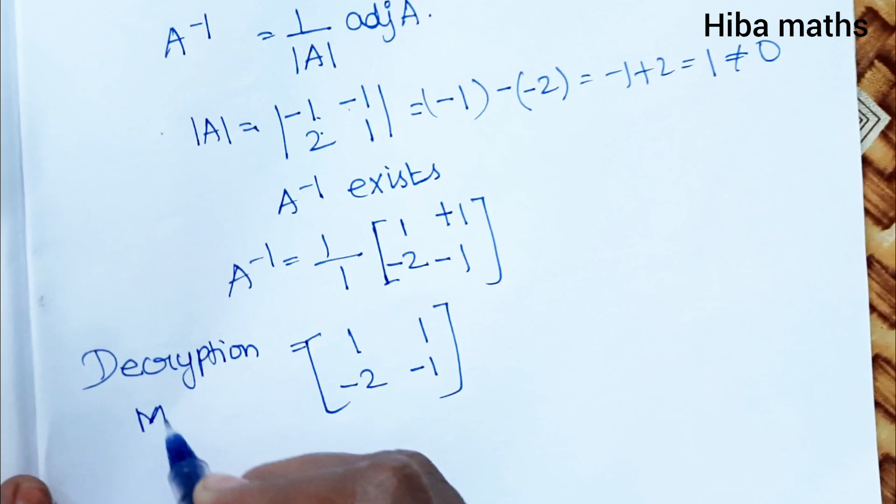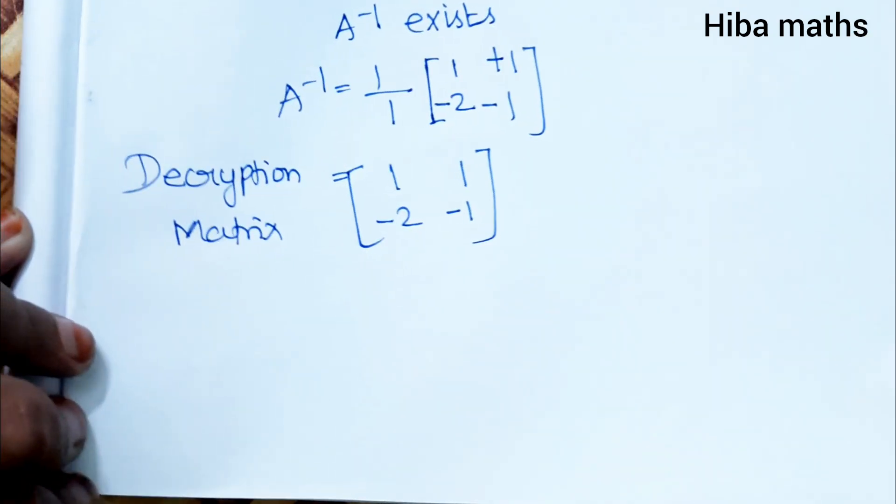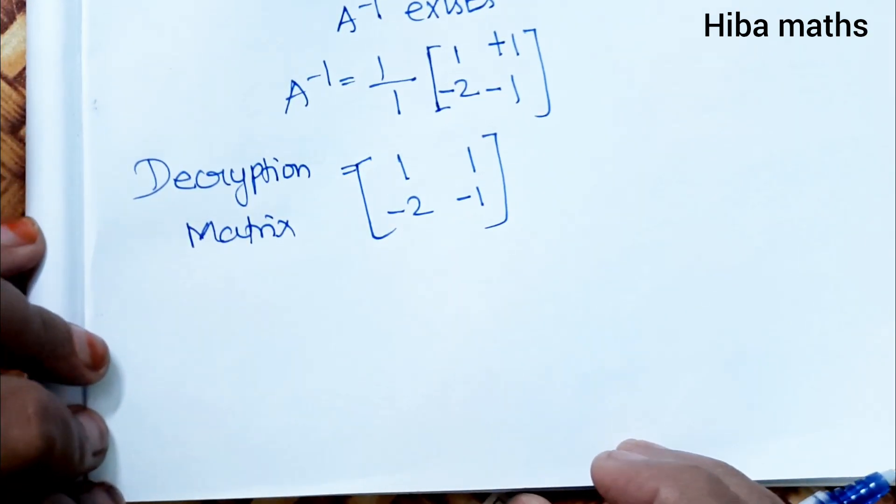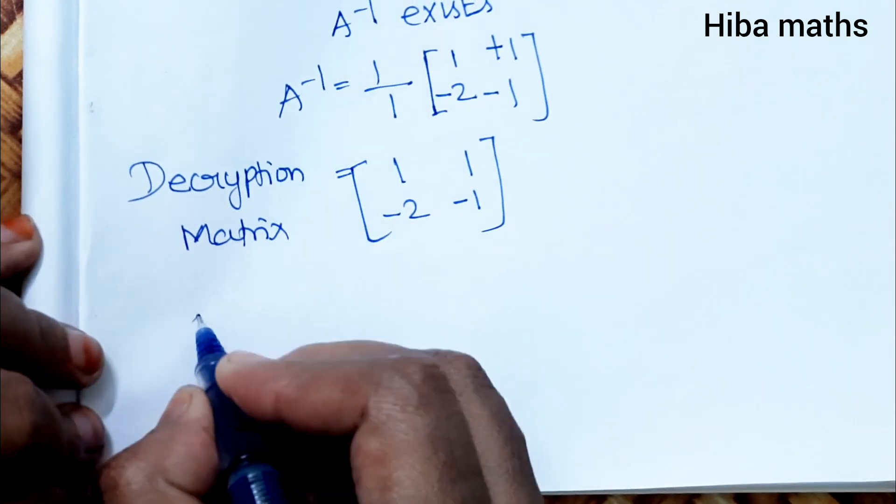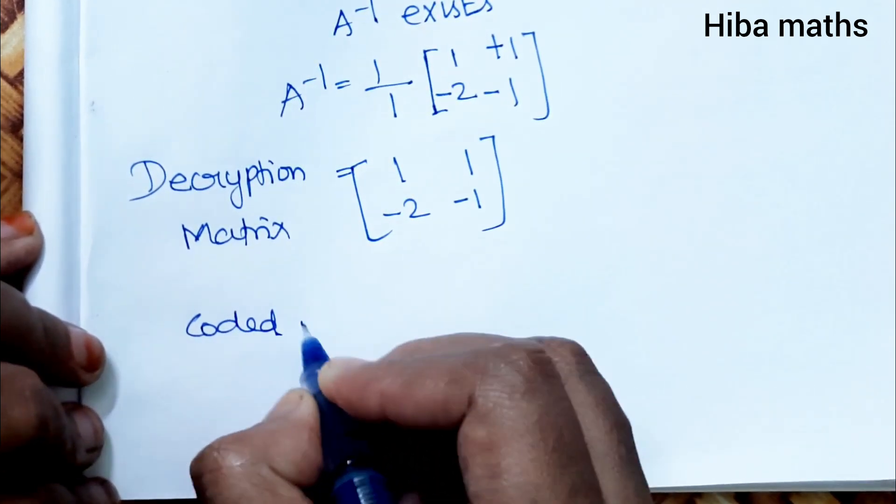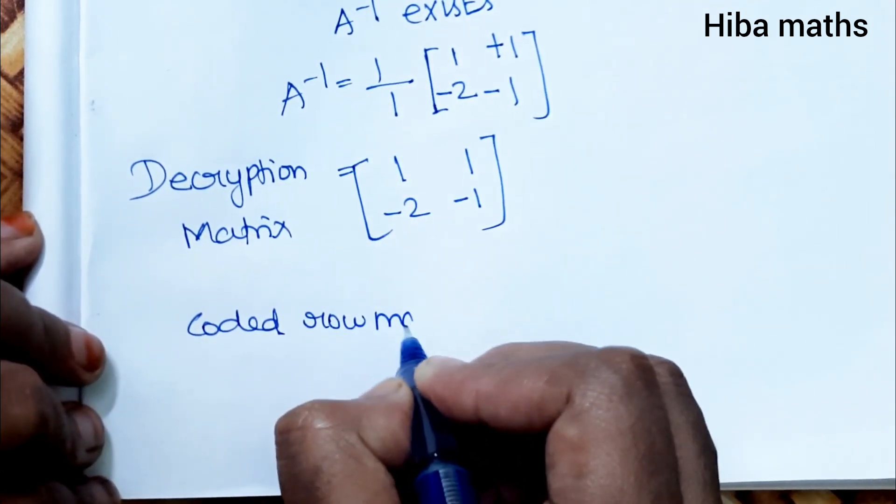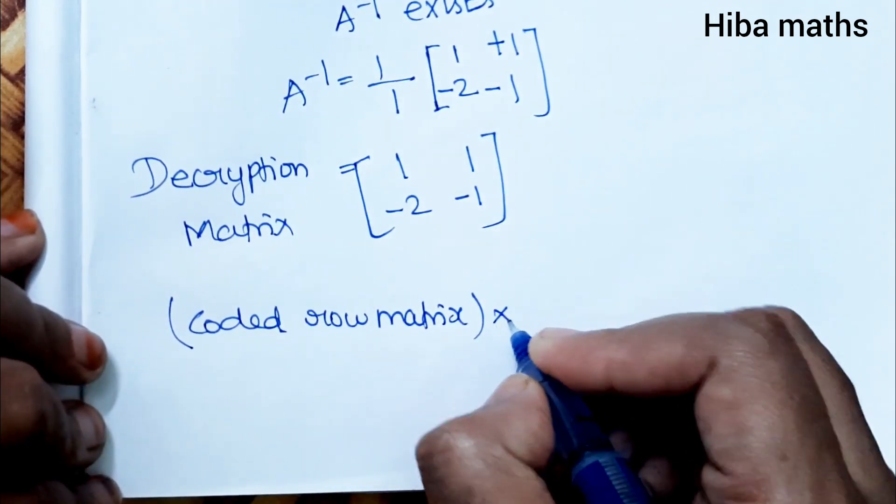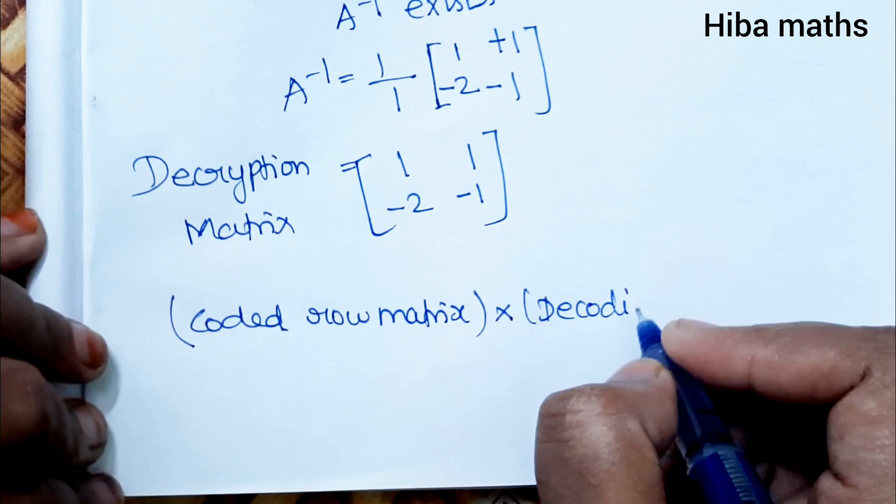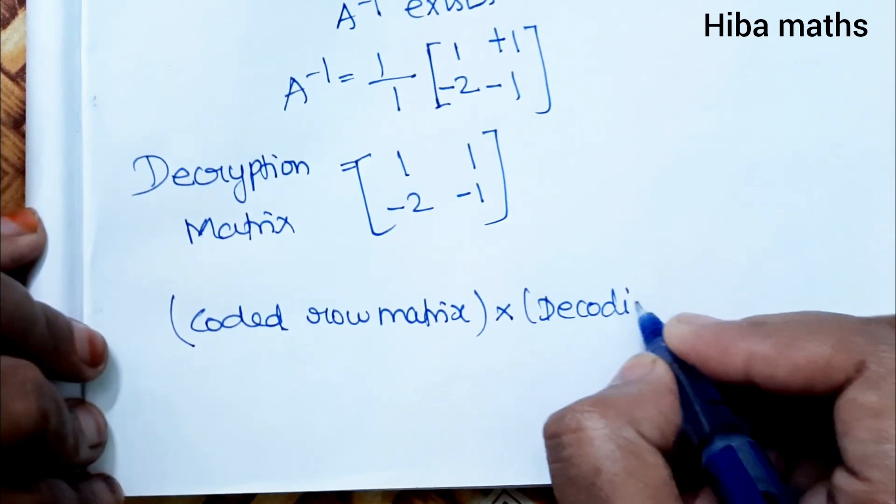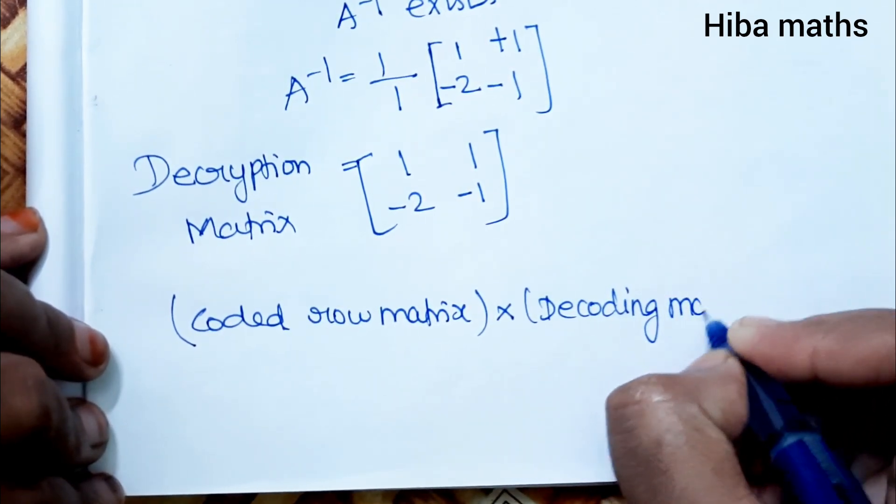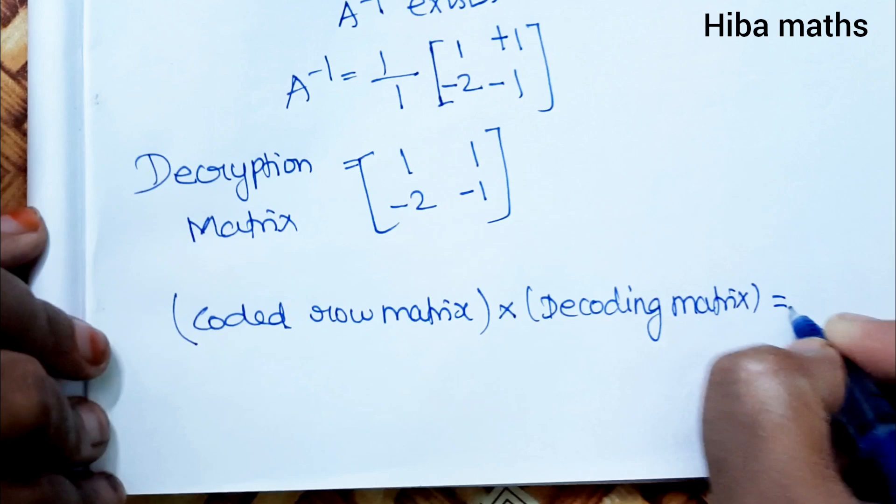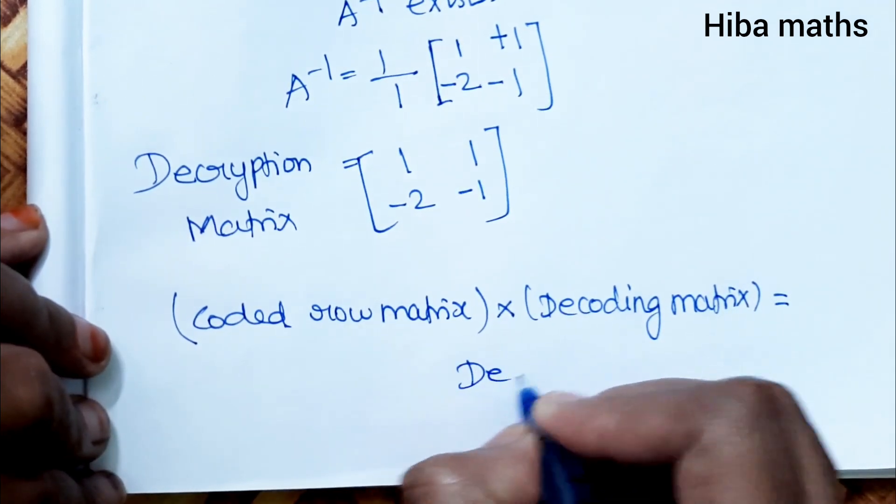Decryption matrix. Next we can do the coded row matrix. The coded row matrix times the decoding matrix equals the decoded row matrix.